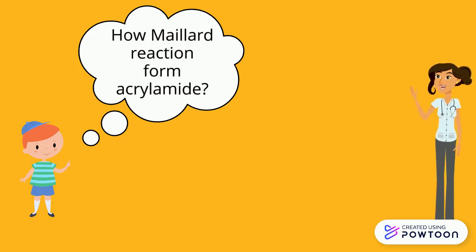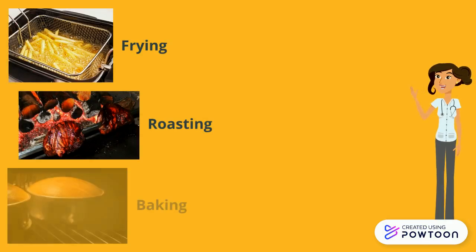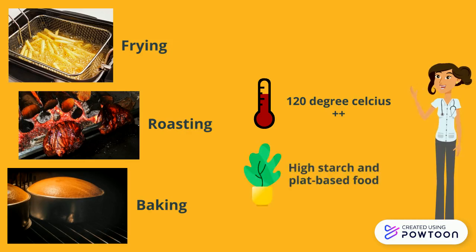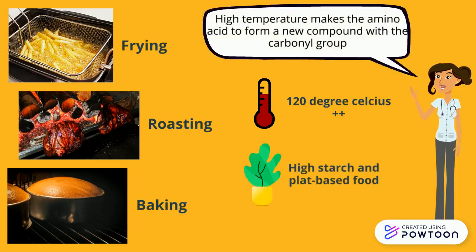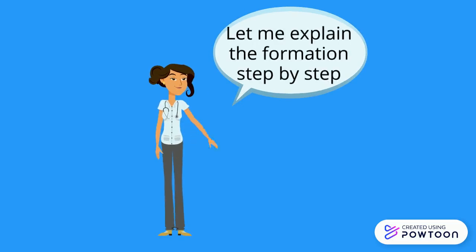Acrylamide is often formed during high-temperature cooking processes such as frying, roasting, and baking, at temperatures of 120 degrees Celsius or above. It also forms especially in high-starch-content or plant-based foods like potato. The high temperature causes the amino acids in food to form new compounds with the carbonyl group.